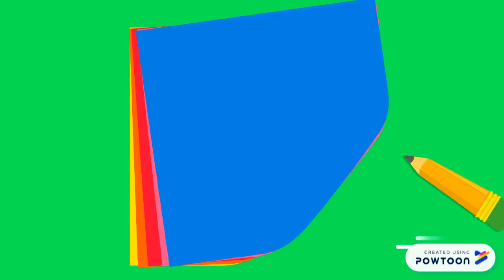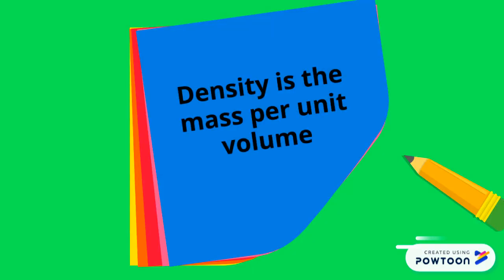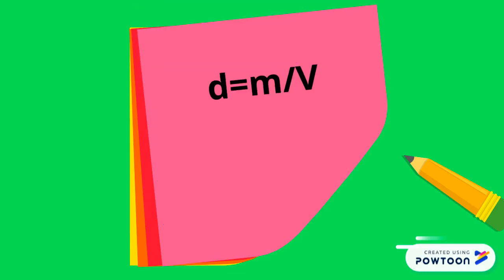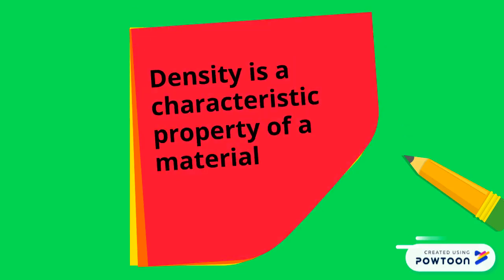In this lesson, we defined density as mass per unit volume: density equals m over v. We said that density is a characteristic property of a material. The SI unit of density is kilograms per meter cubed.